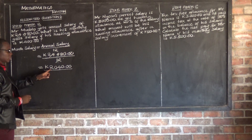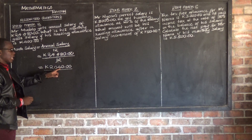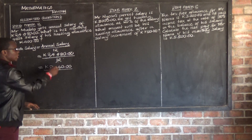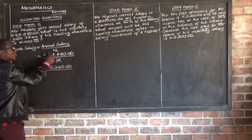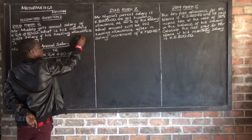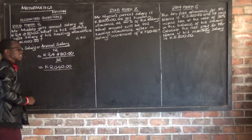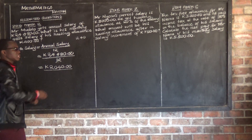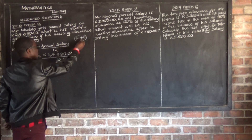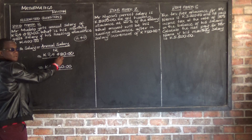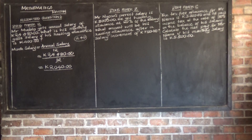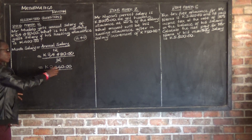Be very careful. Don't just say 12 into 24 is 2 and 12 into 48 is 4, giving 24 — that answer would be wrong. If you want to verify, multiply 2,040 by 12 and you should get 24,480. So the monthly salary is 2,040.